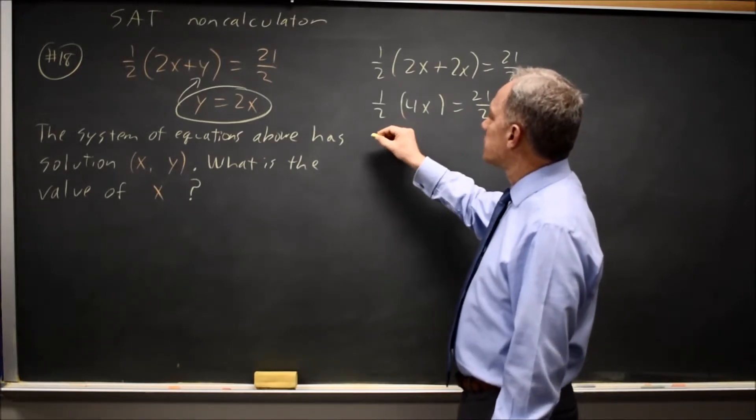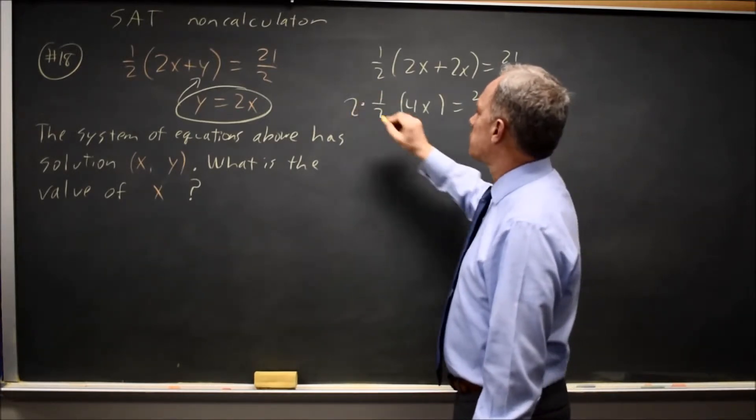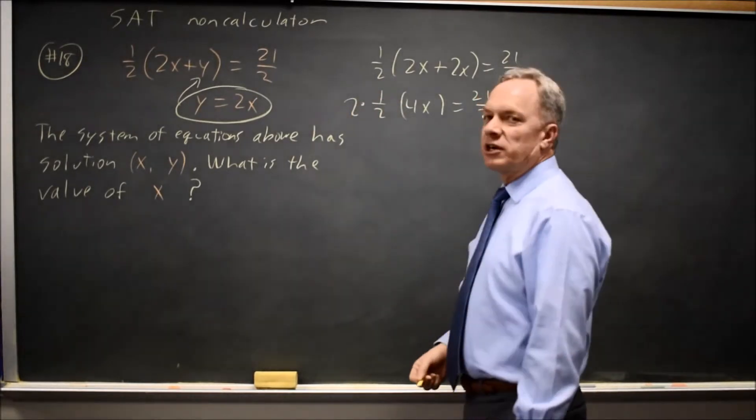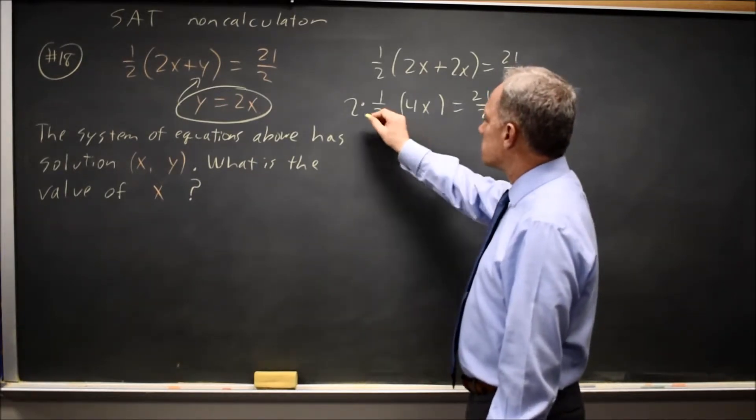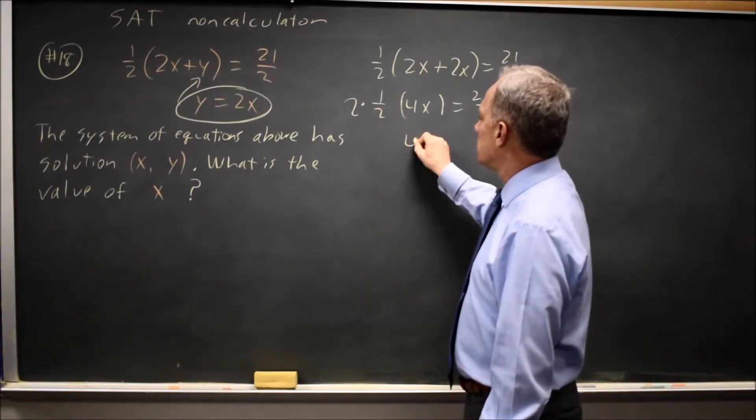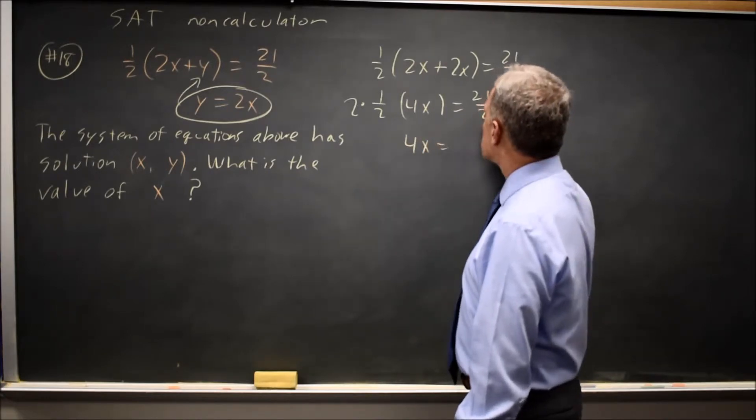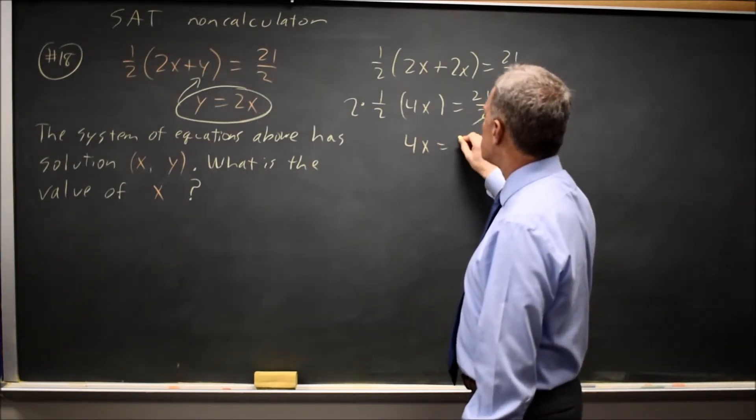Rather than taking half of 4x, I'm going to multiply both sides by 2 because fractions are always harder than whole numbers. So twice 1 half is 1, that gives me 4x, and twice 21 over 2, the 2 over 2 is 1, so that's 21.